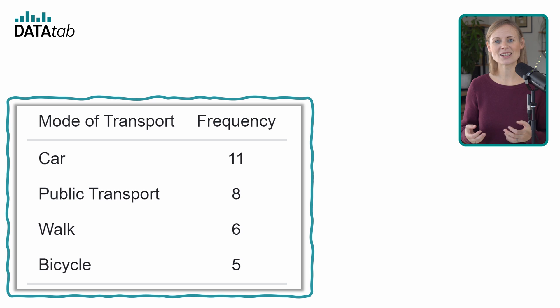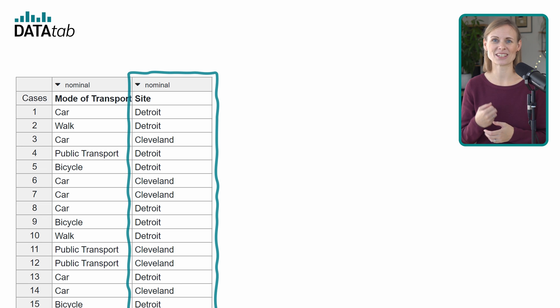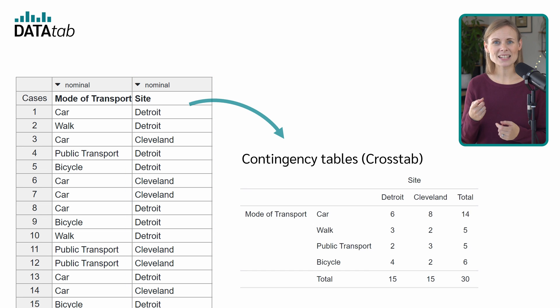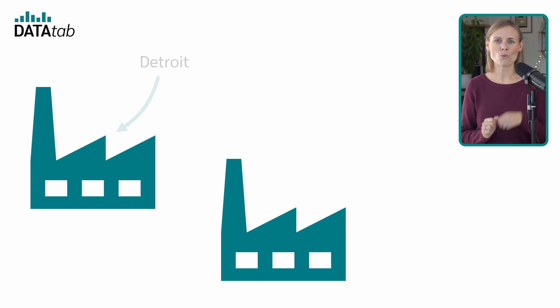But what if we have a second categorical variable? This is when the contingency table comes in. Imagine the company doesn't have one factory, but two: one in Detroit and one in Cleveland. To be honest, I'm not sure how many people in Detroit and Cleveland cycle or walk, but it's just an example.